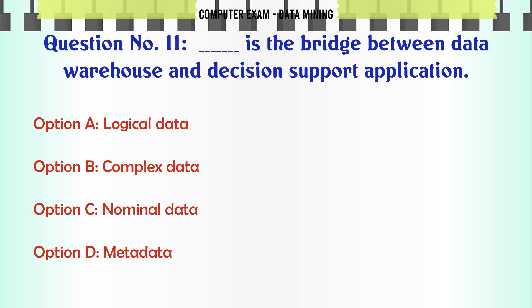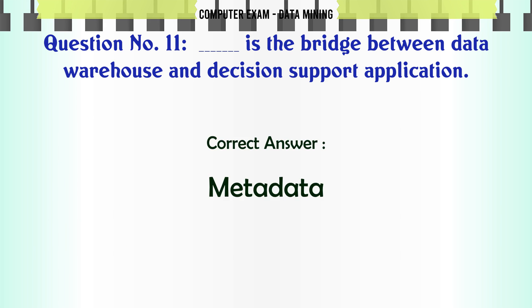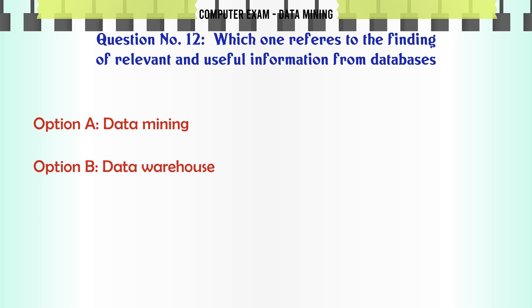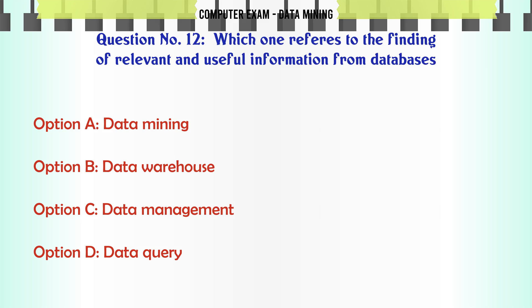Dash is the bridge between data warehouse and decision support application. A. Logical data. B. Complex data. C. Nominal data. D. Metadata. The correct answer is Metadata.